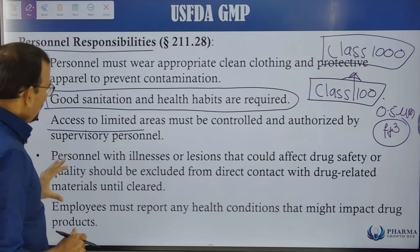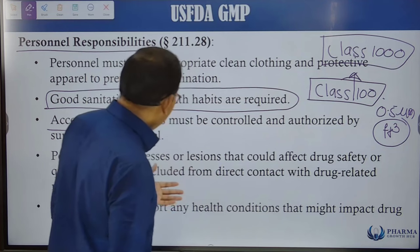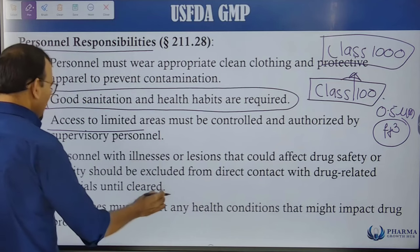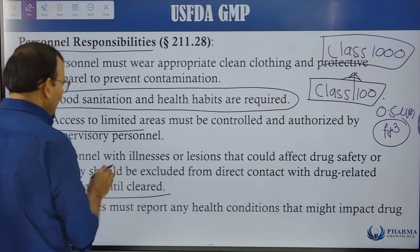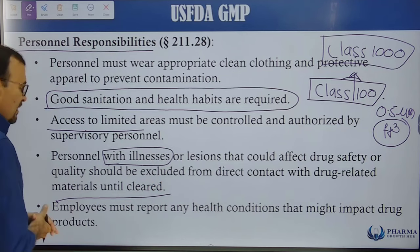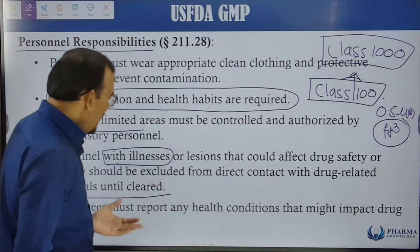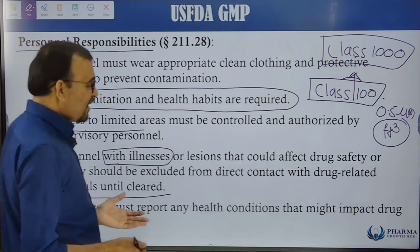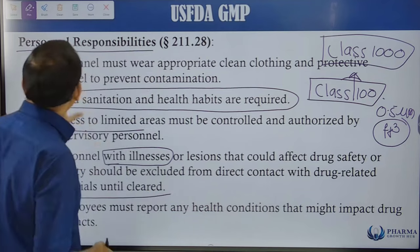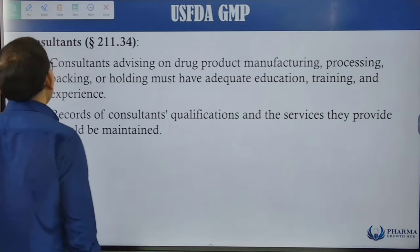Personnel with illness or lesions that could affect drug safety or quality should be excluded from direct contact with drug-related material until cleared. Employees must report any health conditions that might impact the drug product. This includes contagious diseases that may impact product quality, so personnel should report such illness so appropriate corrective actions can be taken.